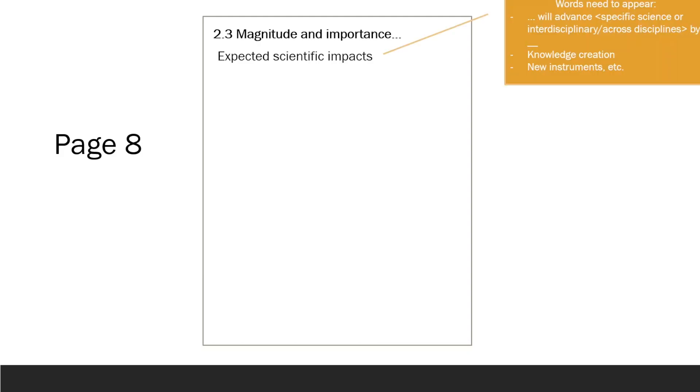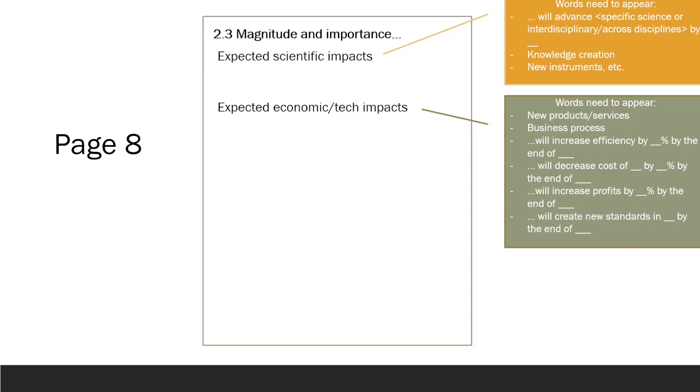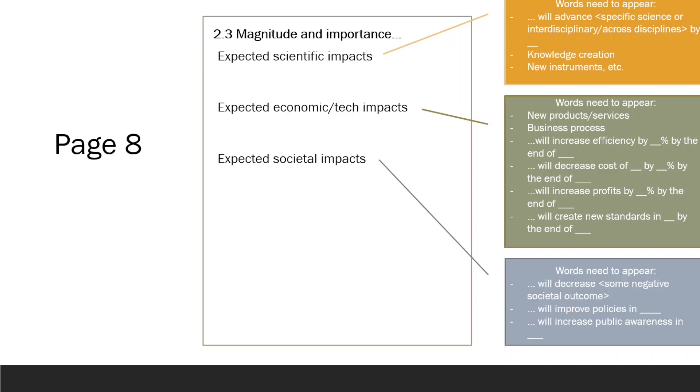For scientific impacts, consider the creation of knowledge or the development of new methods and instruments. Describe how the project will advance specific disciplines or multiple disciplines. For economic impacts, think about the potential creation of new products, services, or business processes. You can also mention specific outcomes in terms of percentage increase or decrease. For societal impacts, consider the potential policy changes or improvements, increasing public awareness on specific topics, or reducing negative social outcomes as a result of your project.